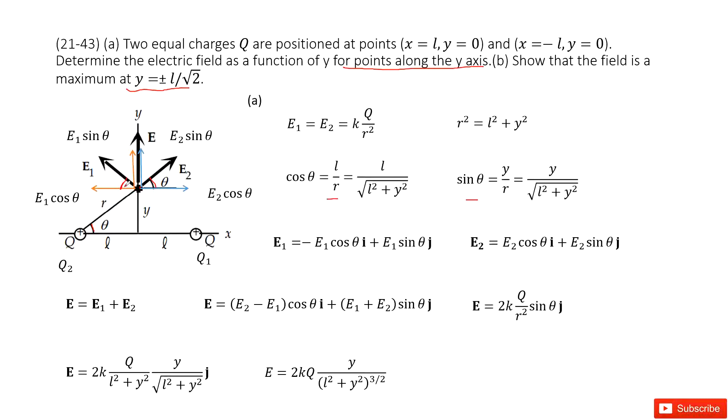We can write the electric field E1 with x-component and y-component. We need to pay attention to this negative sign, because E1 projected in the x-component is pointing to the left. Similarly, we get vector E2 in x-component and y-component. Now we add these two vectors together. The x-components cancel, so this term becomes zero.